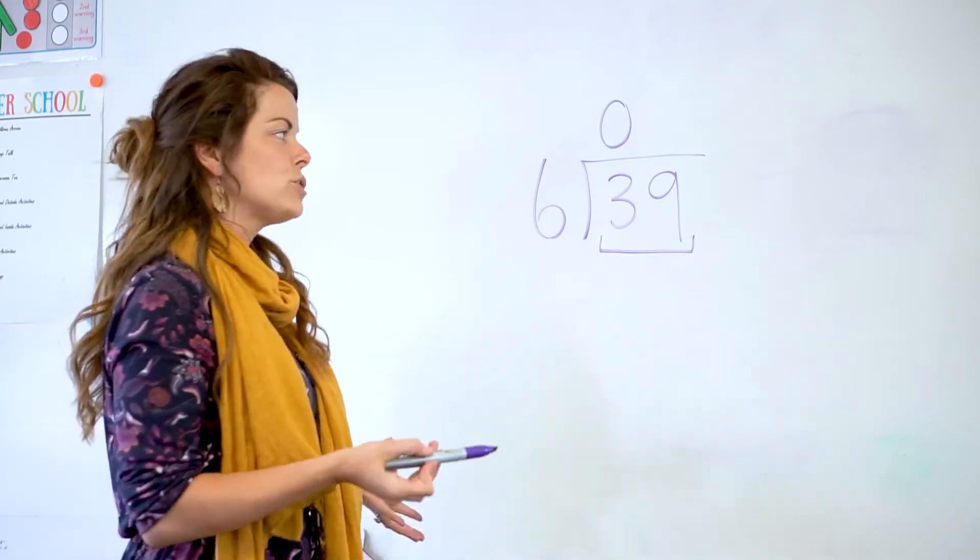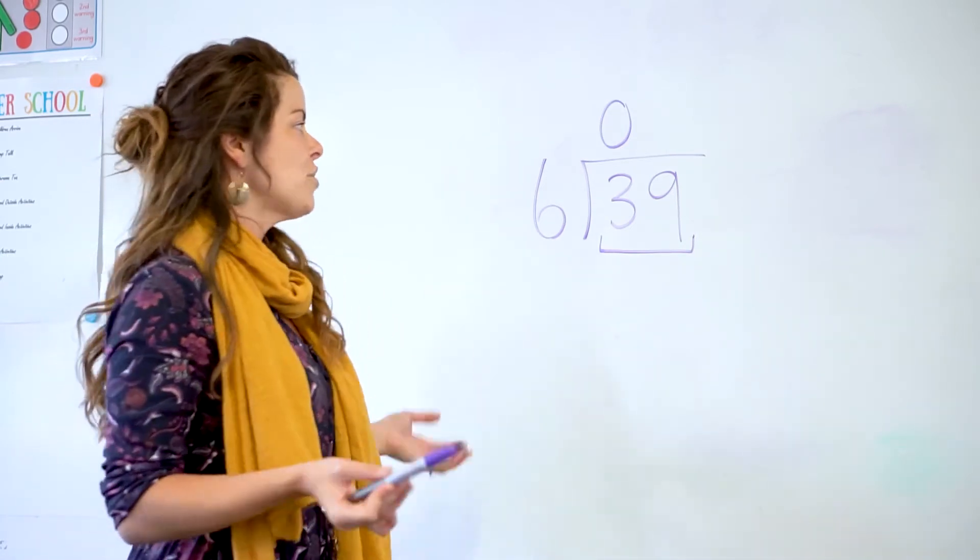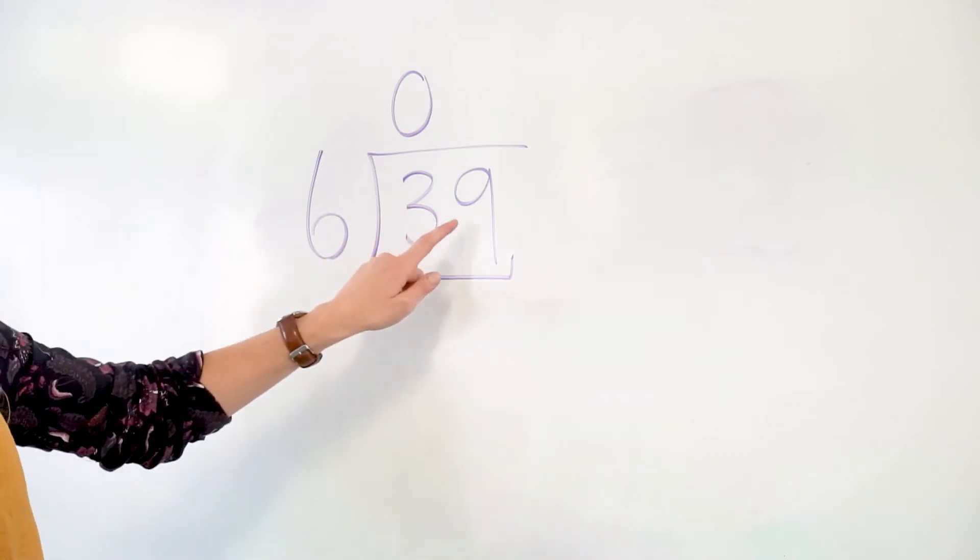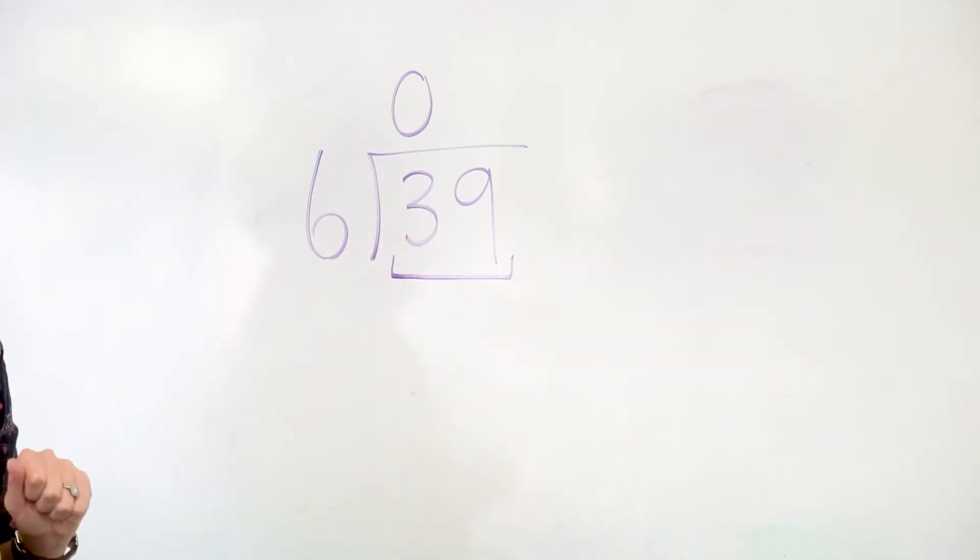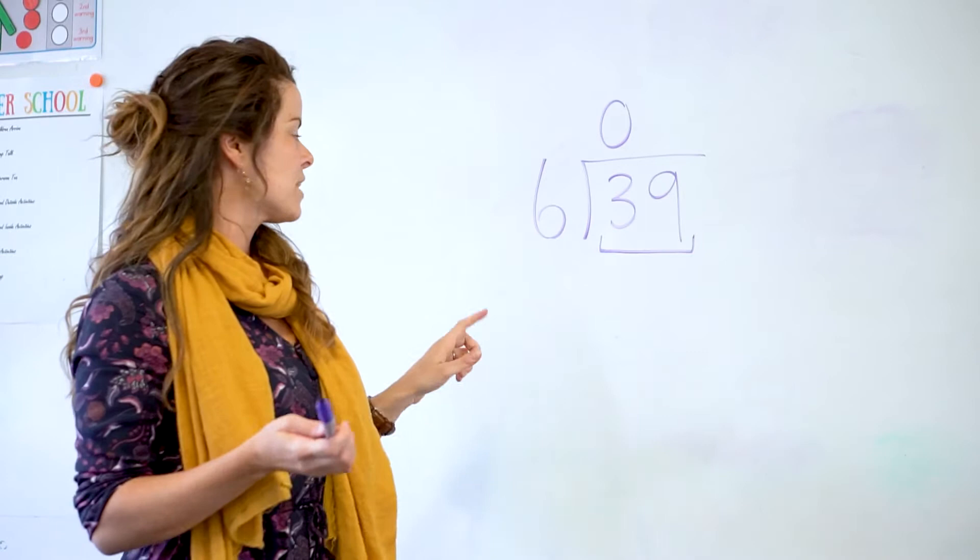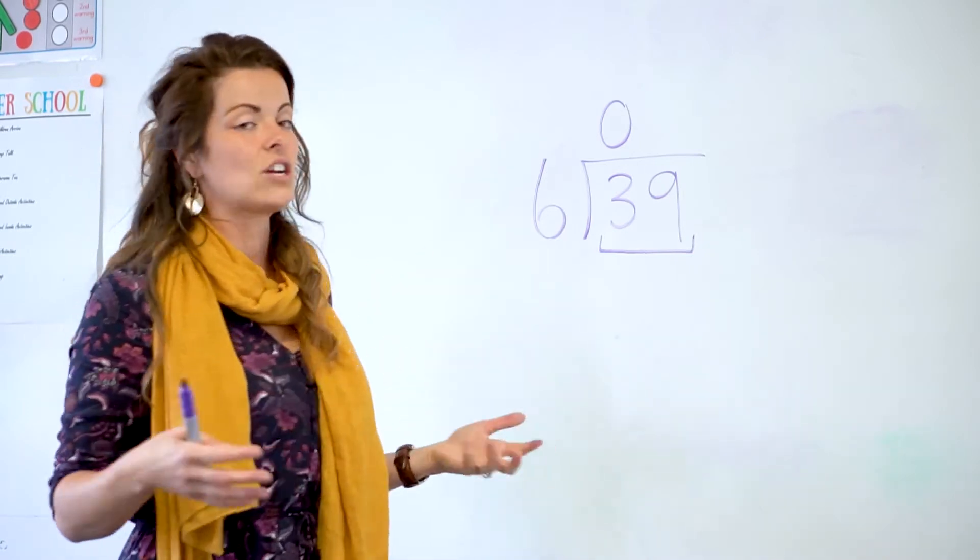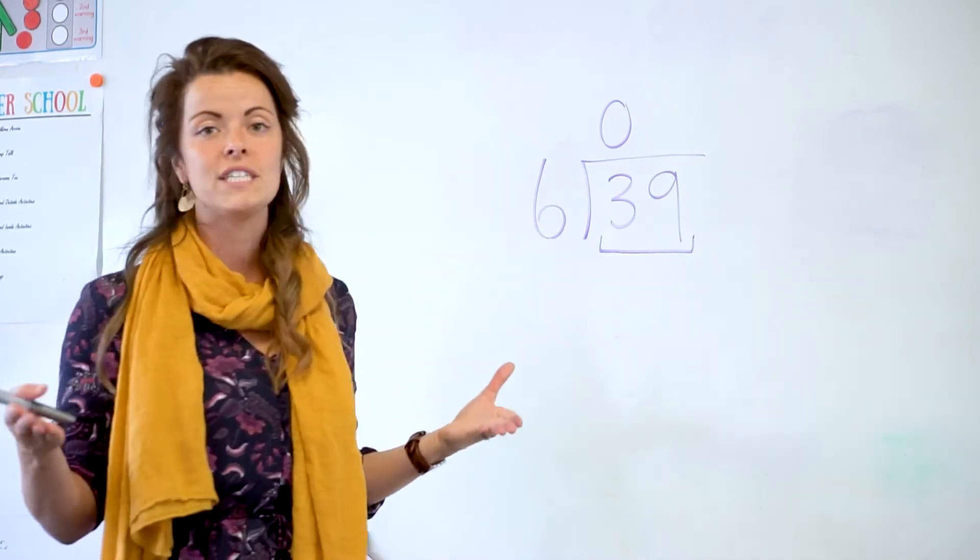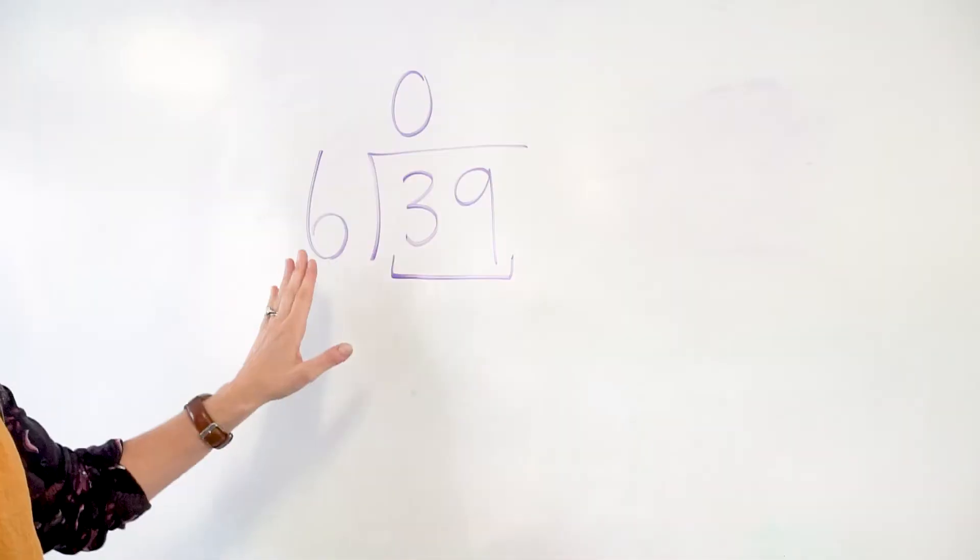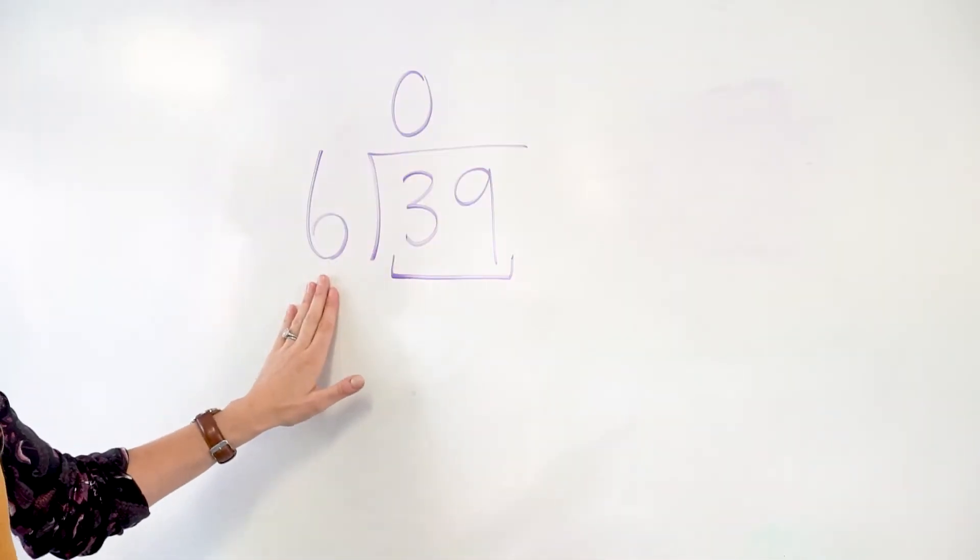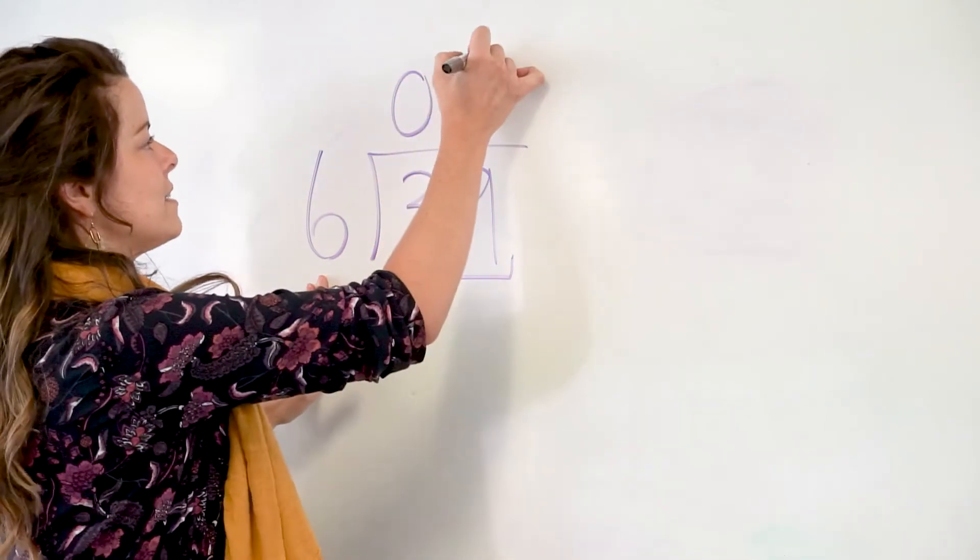Now if I use my knowledge of my times tables or multiplication, I know that 6 goes into 36 six times, but I can't go any further. I can't make it 6 times 7 or else I would go over my 39. So I have to go within that 39, which would be 36, because 6 times 6 is 36. So I'd write my 6 up there.